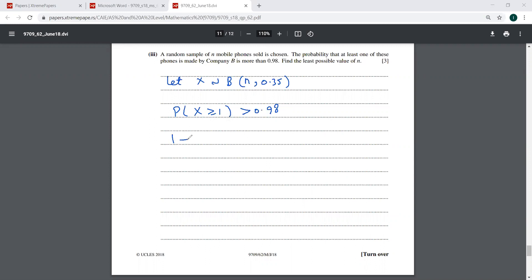So I can write the same thing as one minus probability X equal to zero. That is more than 0.98.